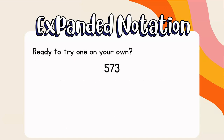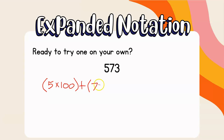Are you ready to try one on your own? The number is 573. Go ahead and pause the video, jot down your answer on a piece of paper or a whiteboard, then unpause to see my explanation. Welcome back — here's the answer: the 5 is in the hundreds place, so (5 times 100) plus (7 times 10) because the 7 is in the tens place, plus (3 times 1) in the ones place, and that equals 573.